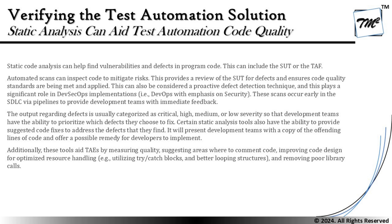Additionally, these tools also aid automation by measuring quality, suggesting areas where to comment the code, improving code design for optimized resource handling, and removing poor library code. This is straightforward to understand — a smart tool can have additional features. However, this is not completely mandatory, and not every static analysis tool will have these options. If these features are available, they can certainly reduce a lot of effort in using static analysis to support automation as well.